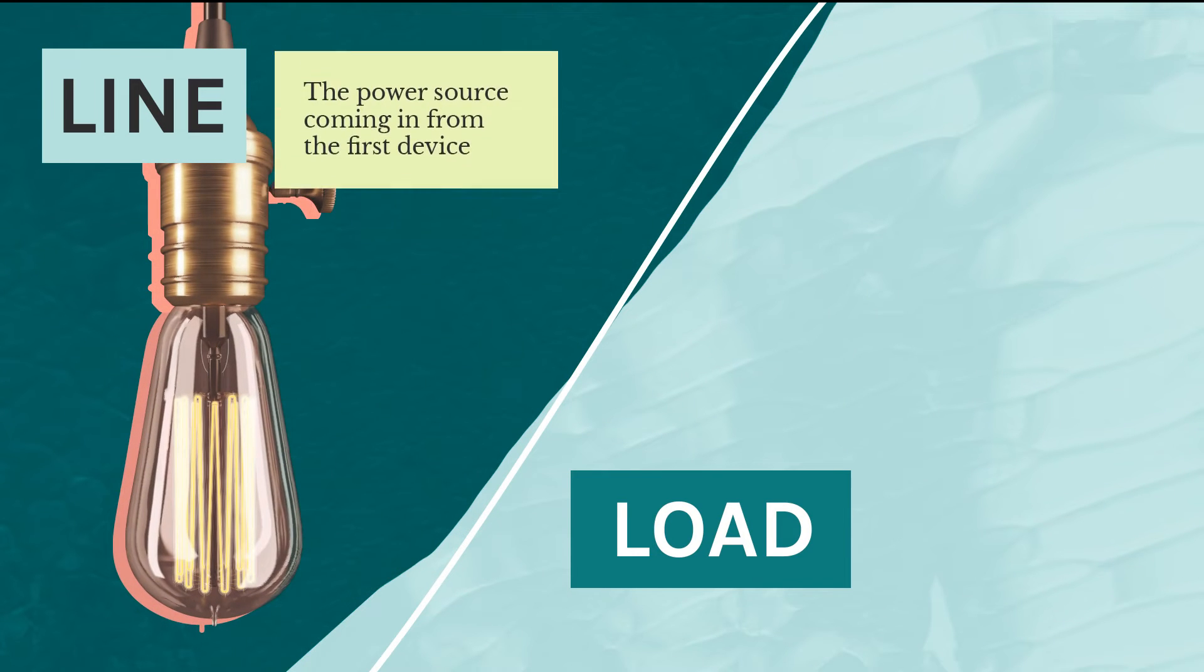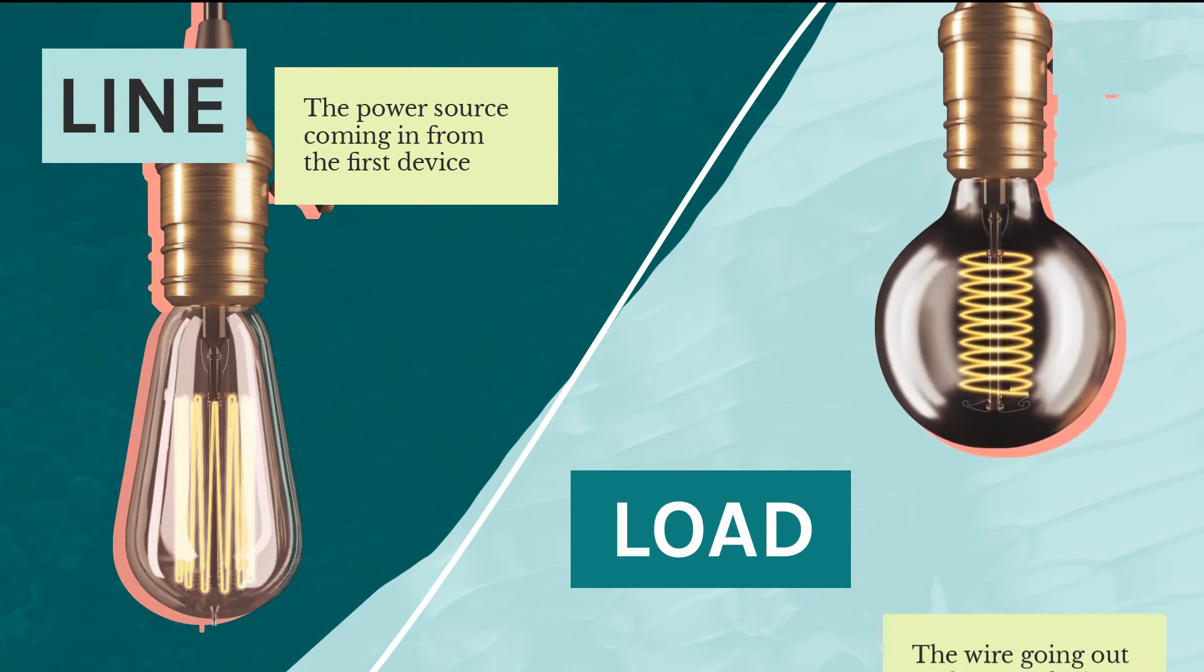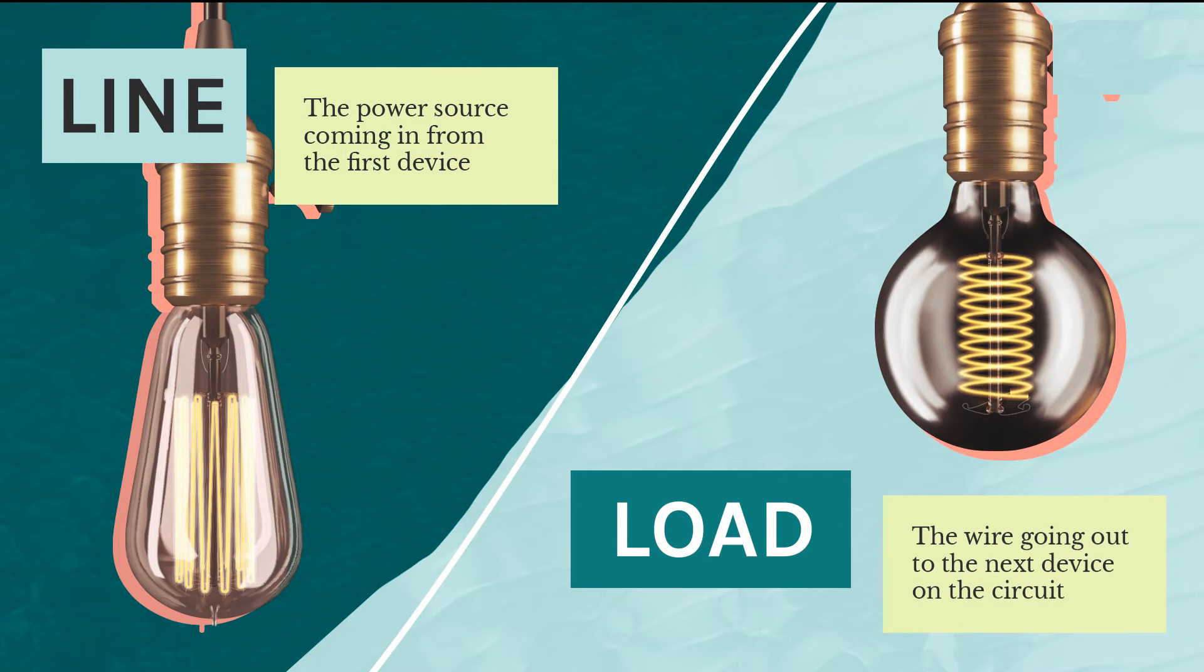At the second device, the line is the power source coming in from the first device, and the load is the wire going out to the next device on the circuit.